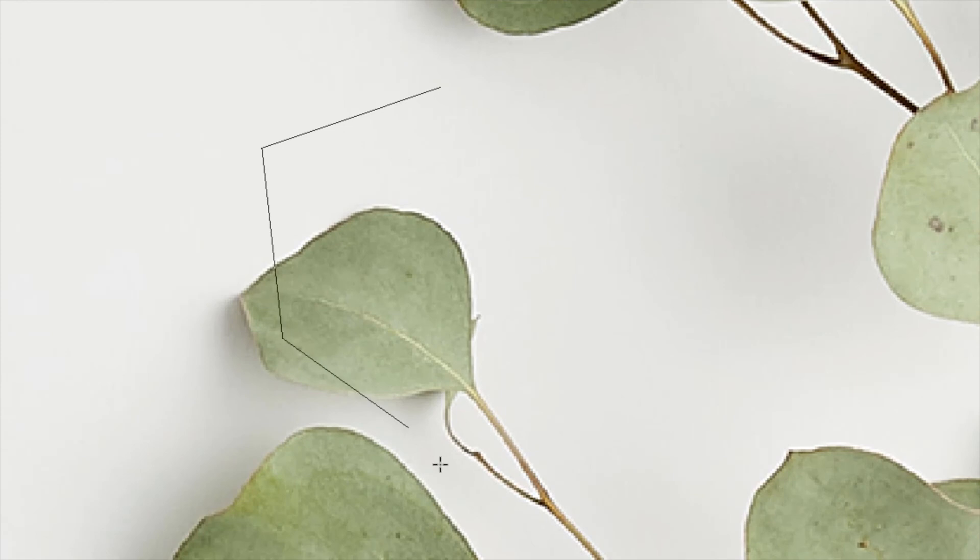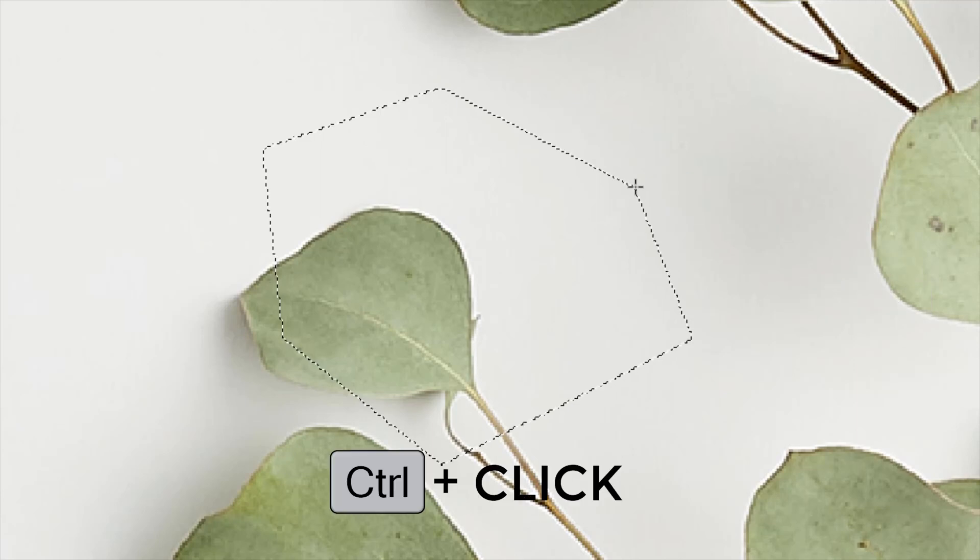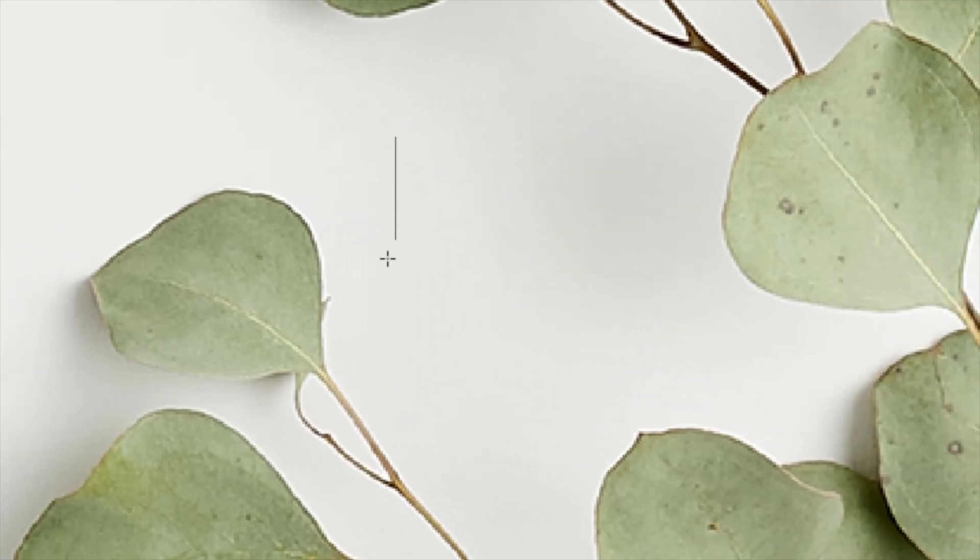The other way will be you can double click at your last point and it will close the selection. Instead of double click, you can also use Ctrl plus click. To draw straight perpendicular lines, press Shift. I'll just double click and close the selection.